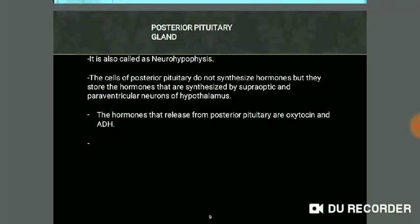The posterior part of the pituitary gland is also called neurohypophysis. The cells of the posterior pituitary do not synthesize hormones themselves. They are actually neurons whose cell bodies are located in the hypothalamus — where the hormones are synthesized — and their nerve endings are located in the posterior pituitary, where the hormones are released. The supraoptic and paraventricular neurons in the hypothalamus synthesize oxytocin and ADH.